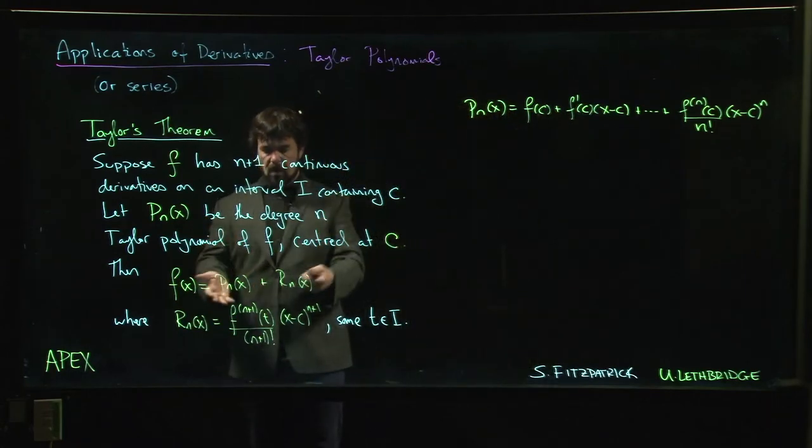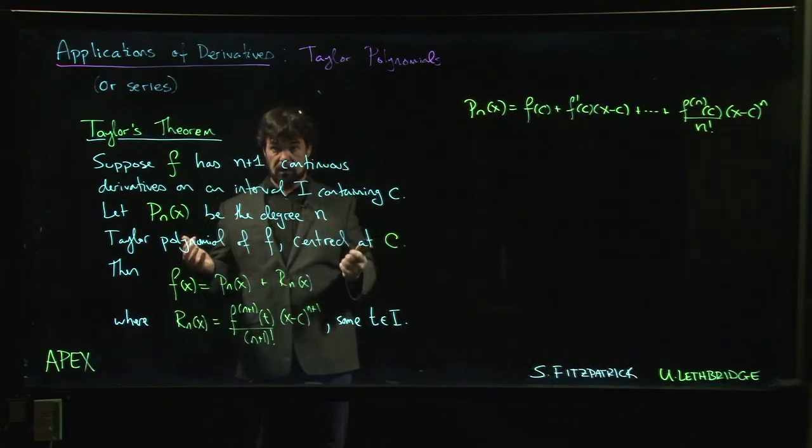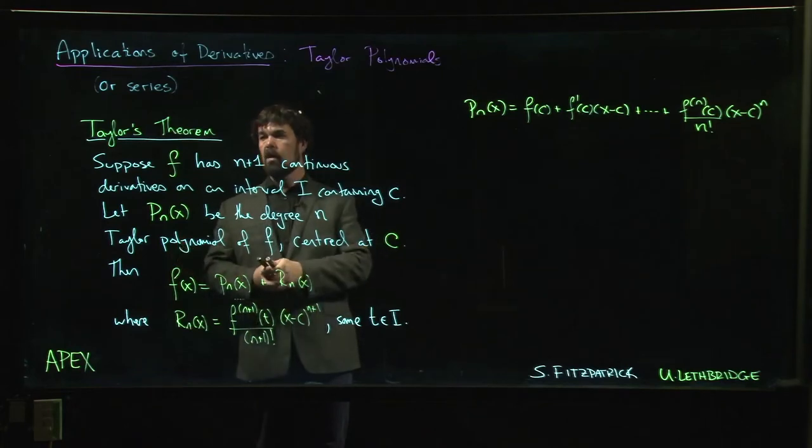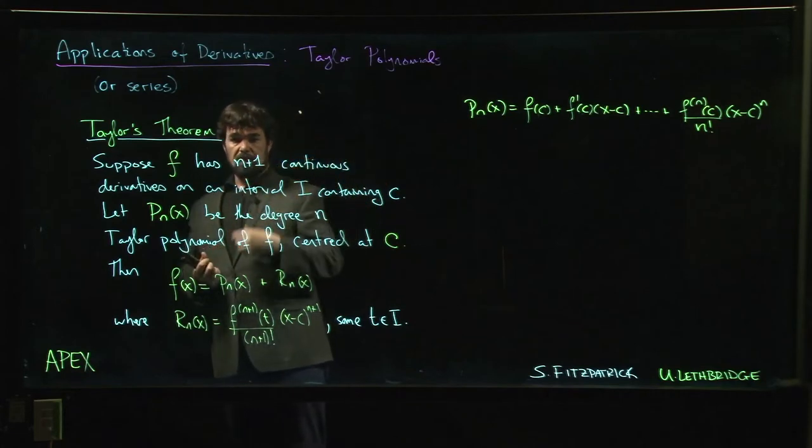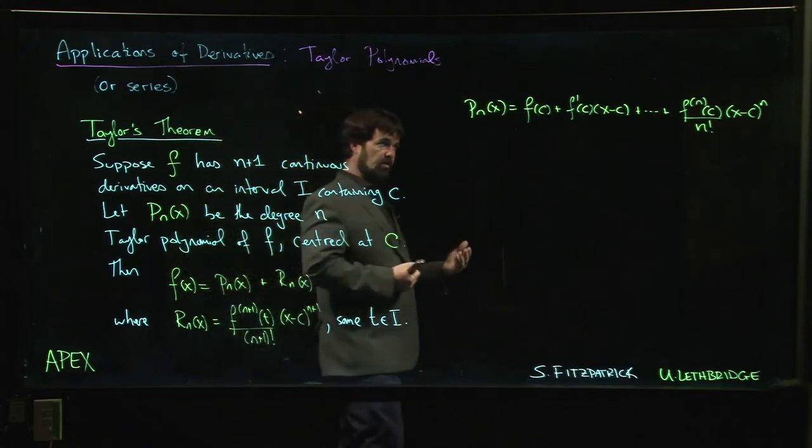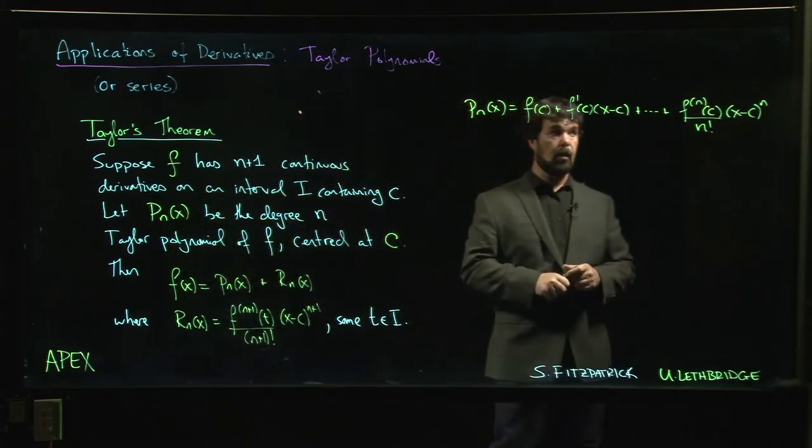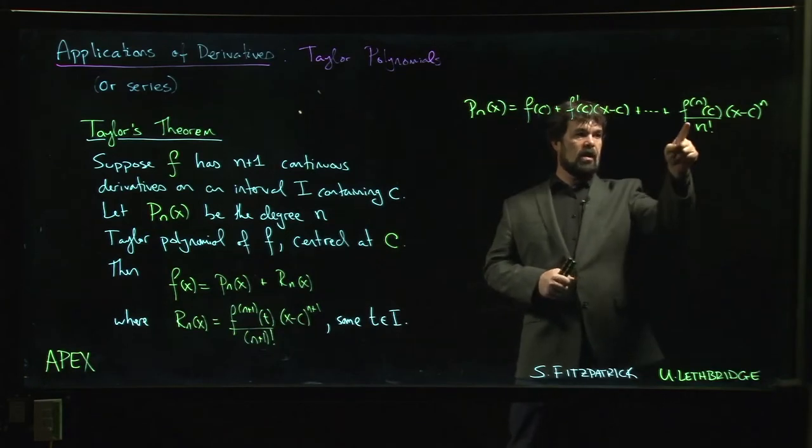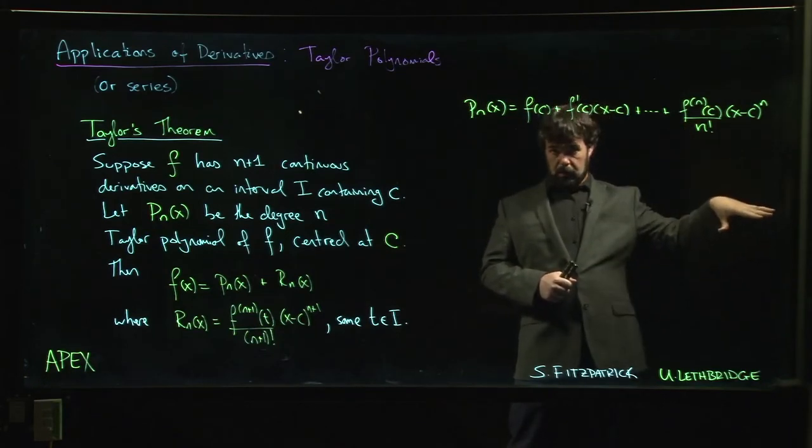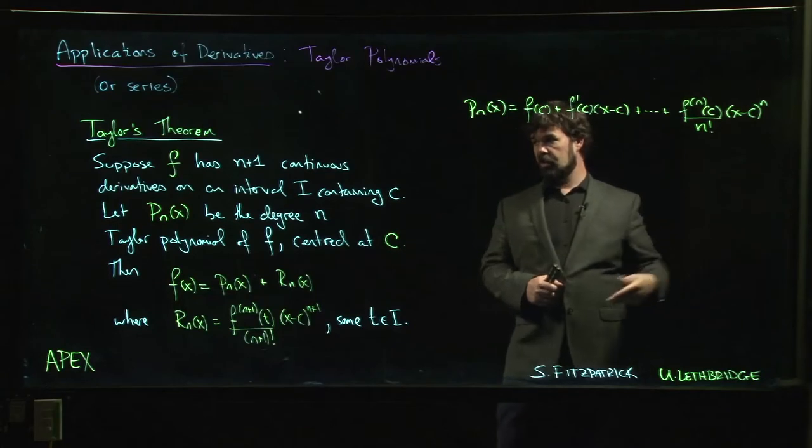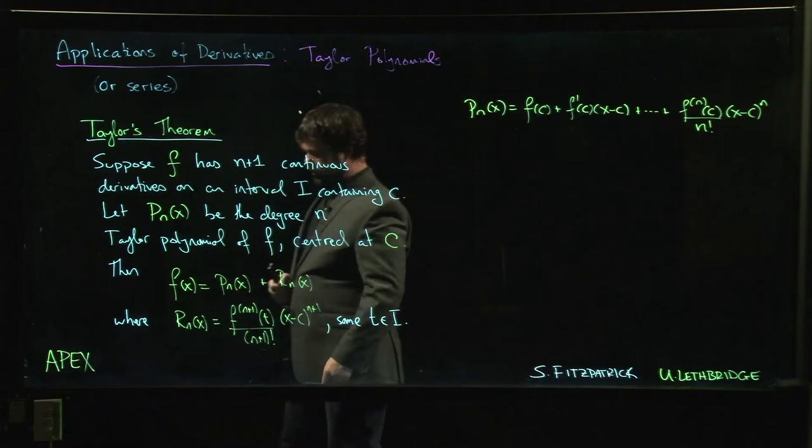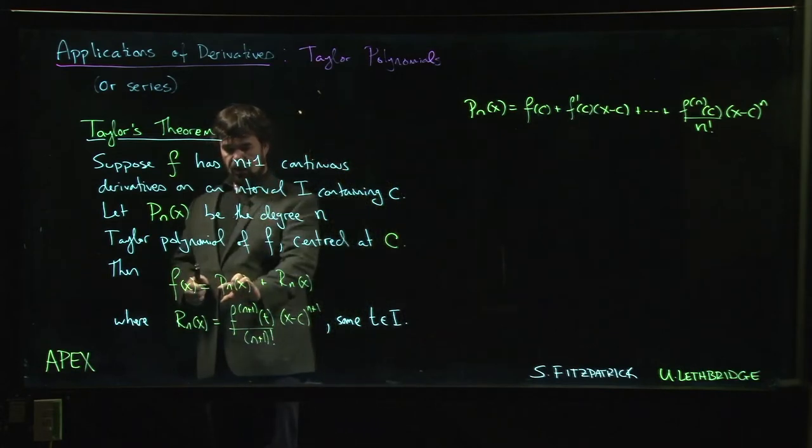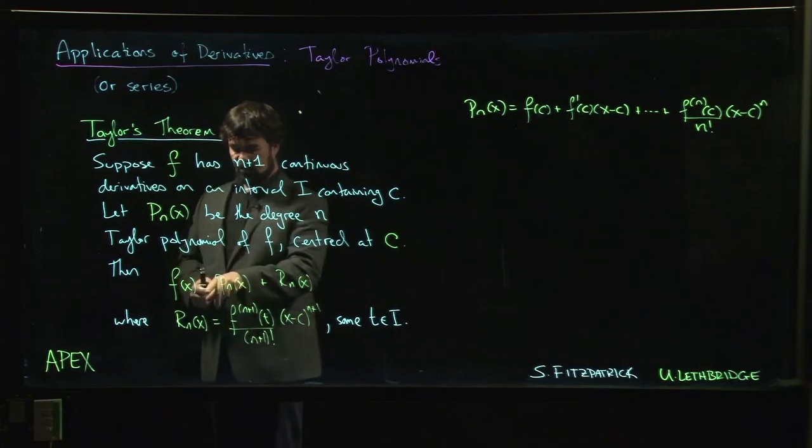Taylor's theorem says that as long as you've got enough continuous derivatives - if you want to use a degree n Taylor polynomial, you need this derivative but you also need the next one, you need n plus one continuous derivatives - you can write your function as the Taylor polynomial plus a remainder.